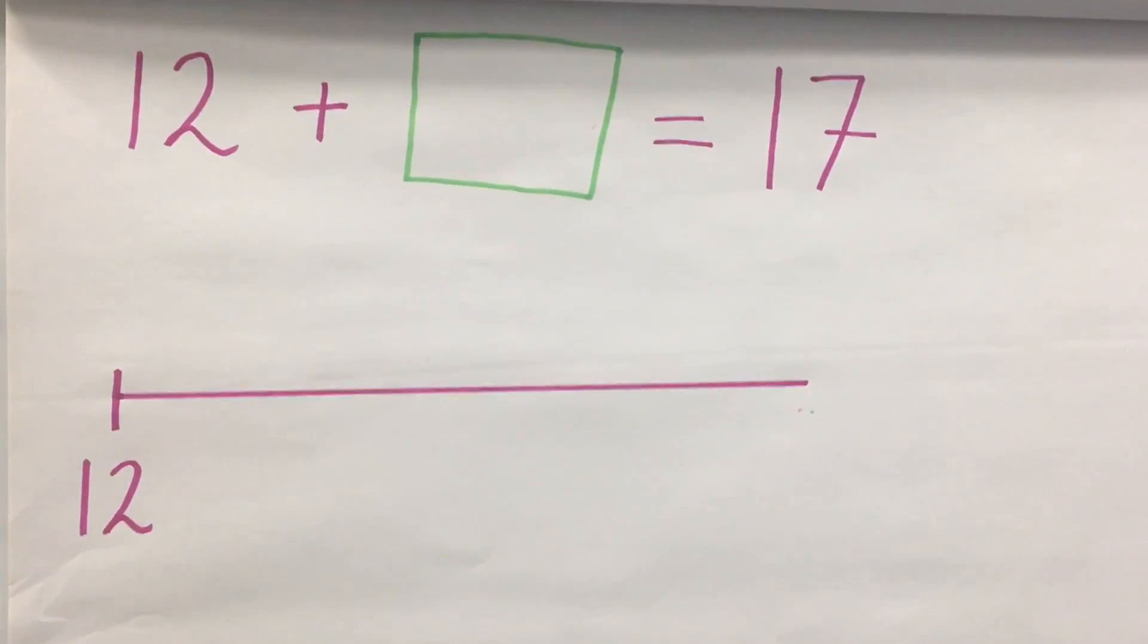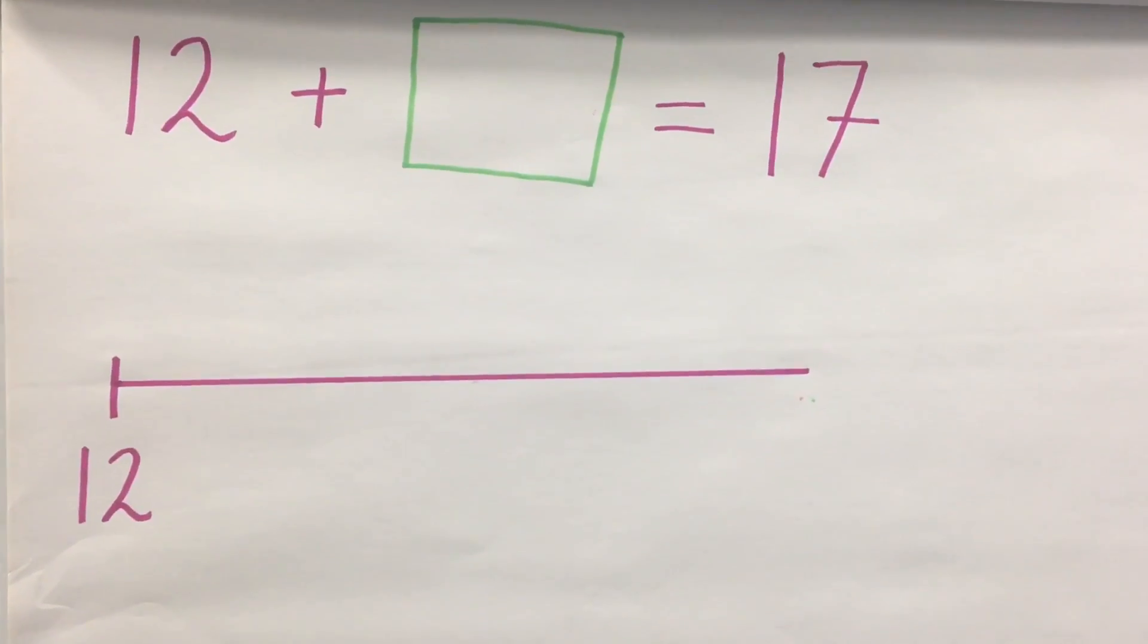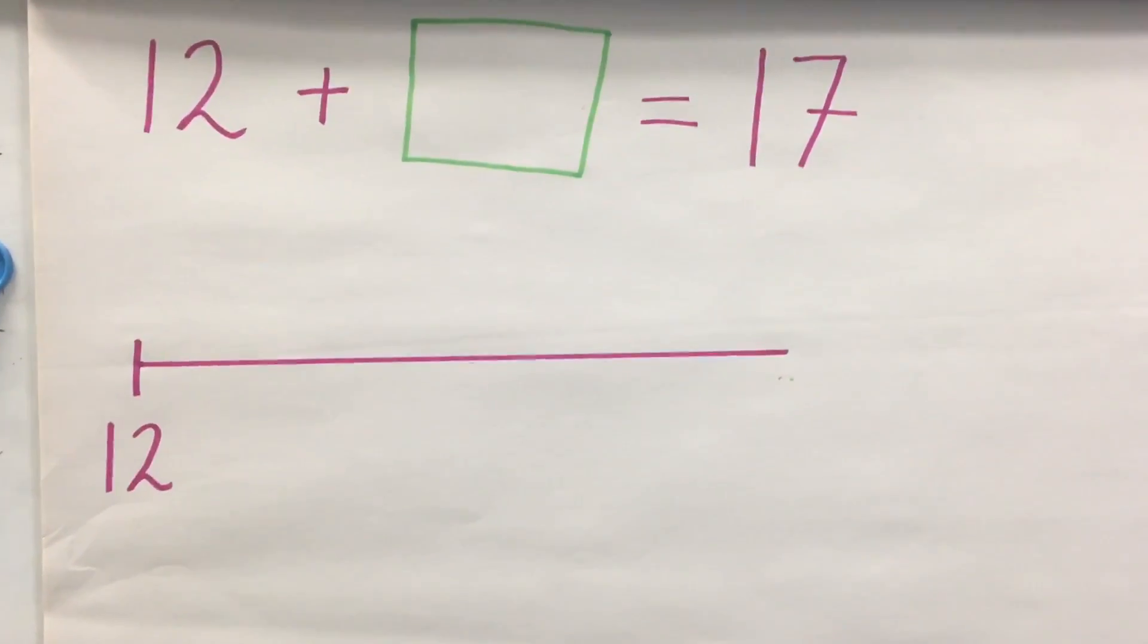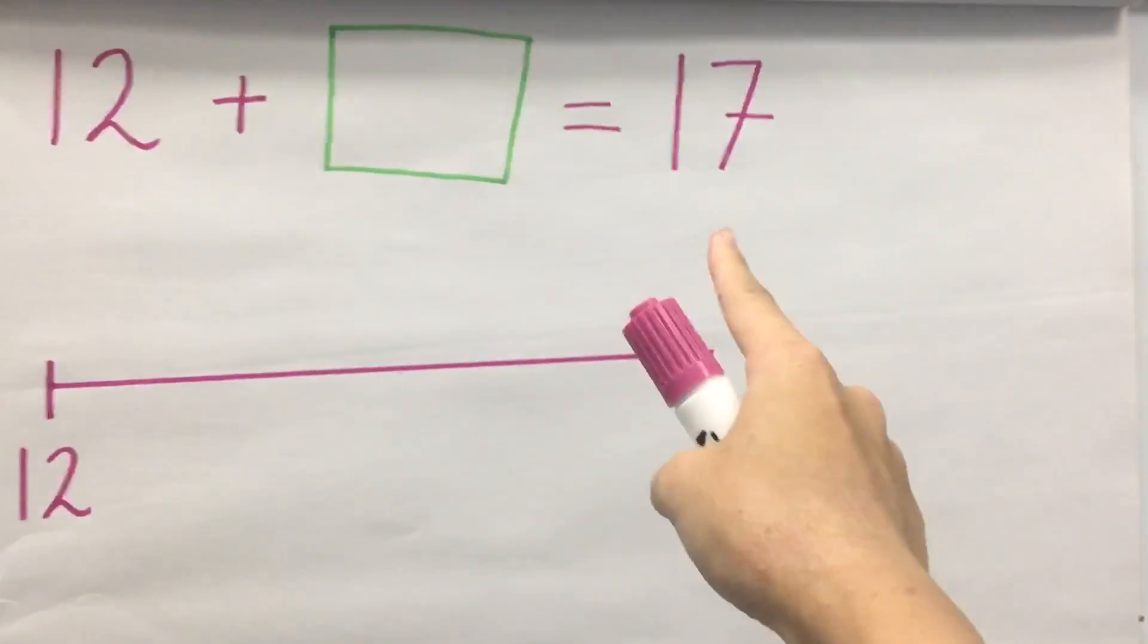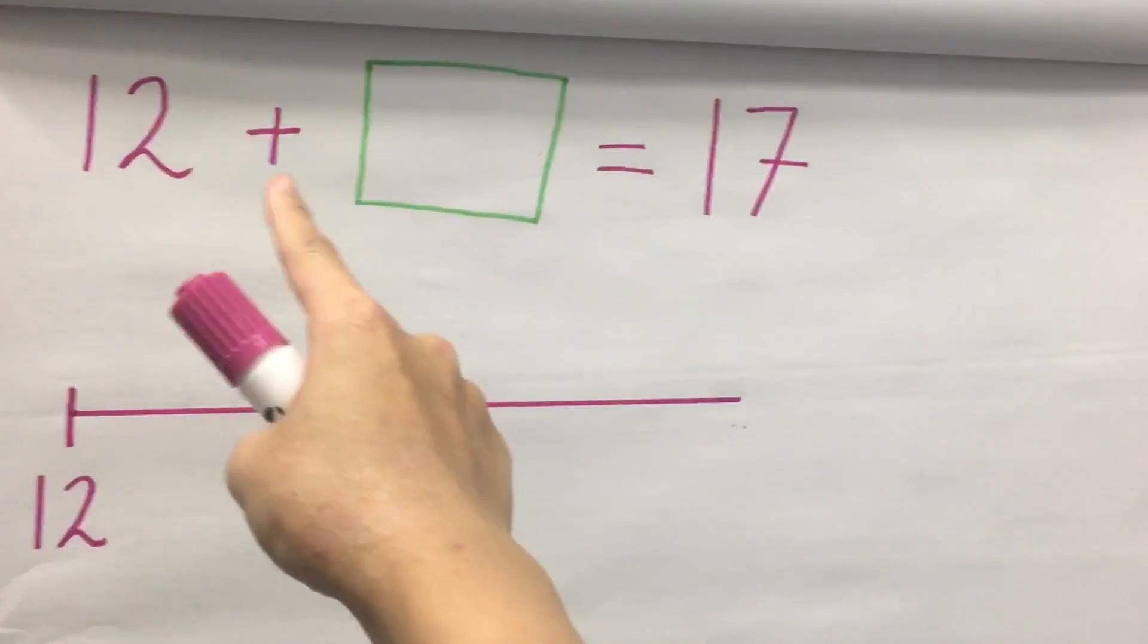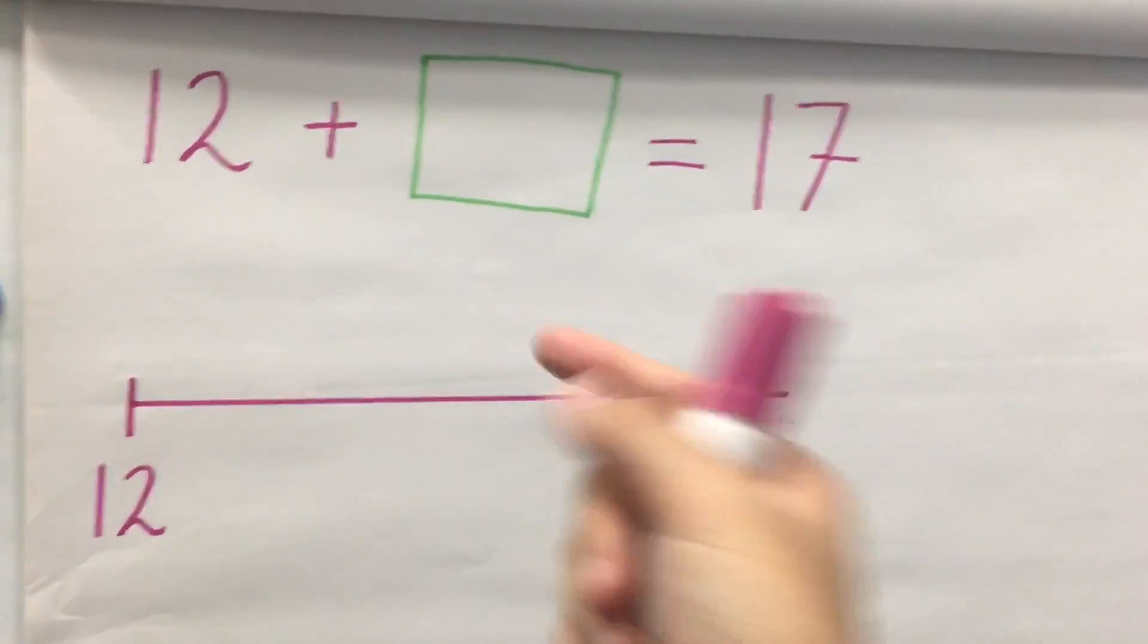This week we're focusing on finding the missing number in a number problem. Children find it especially tricky because we are thinking backwards, going back from 17 to find out what could be the missing number after 12.